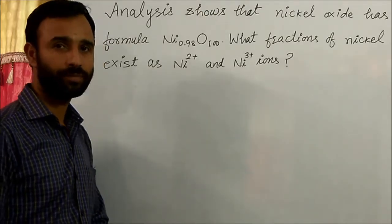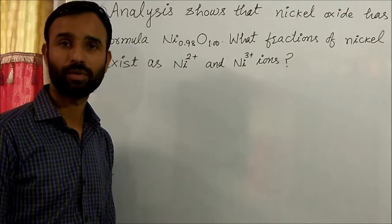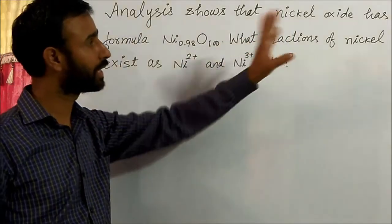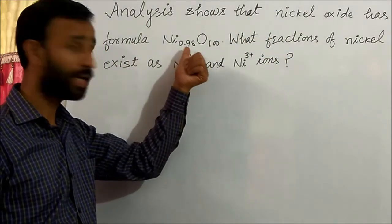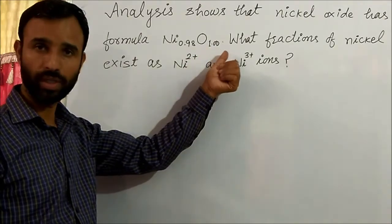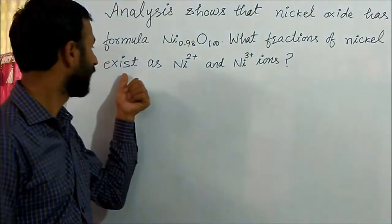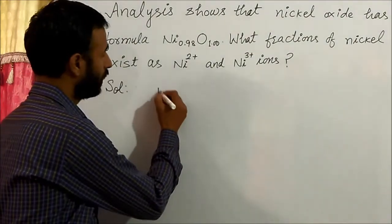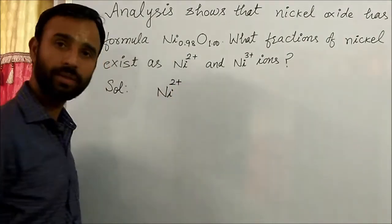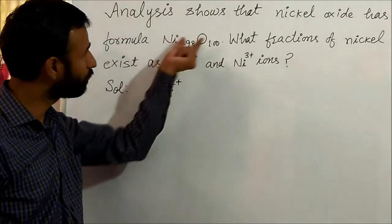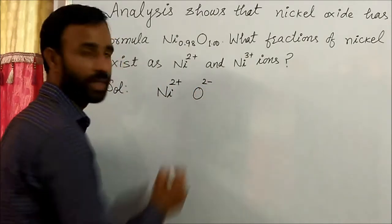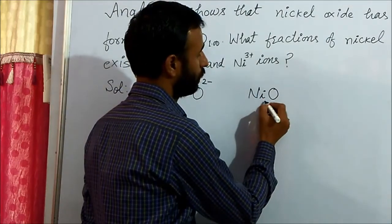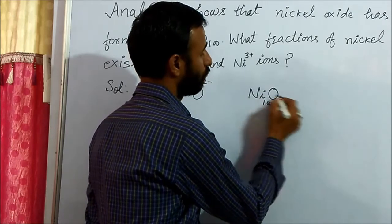Hello students, today we will discuss a question from solid state — it is a very important question. The analysis shows that nickel oxide has the formula Ni₀.₉₈O₁.₀₀. So what fractions of nickel exist as Ni²⁺ and Ni³⁺ ions? If nickel is 2+ only, then the formula of nickel oxide should be Ni₁.₀₀O₁.₀₀.